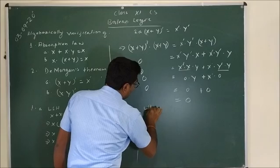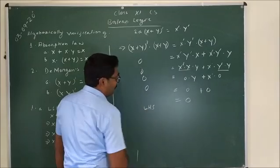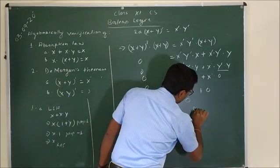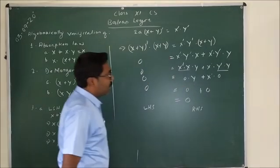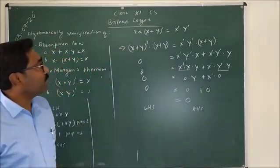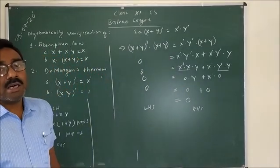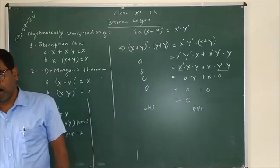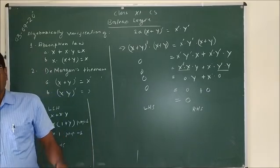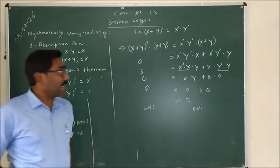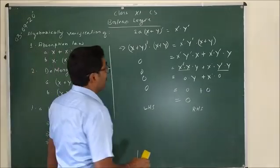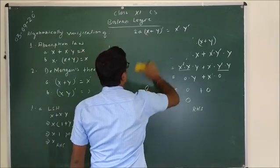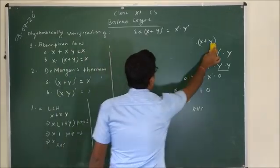The left hand side is derived as 0 and the right hand side is also derived as 0. This is the proof of the first part of De Morgan's theorem.